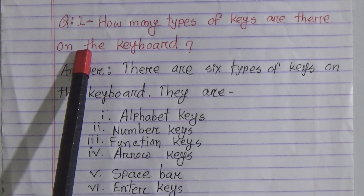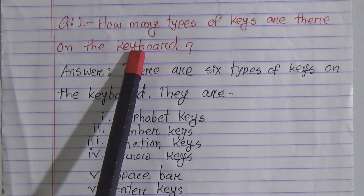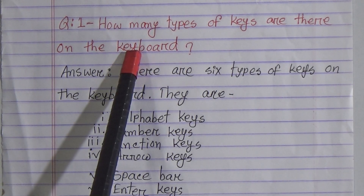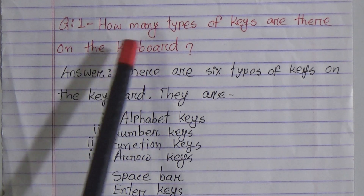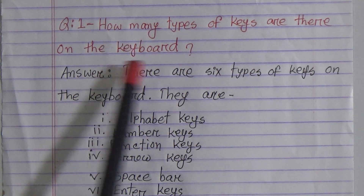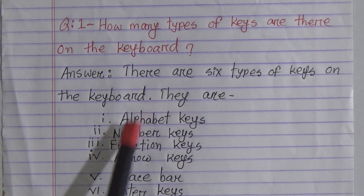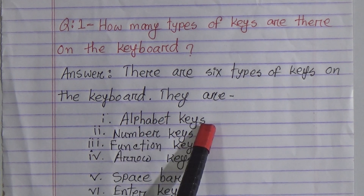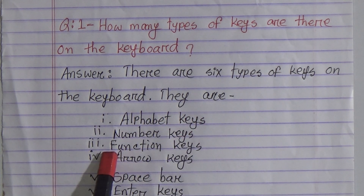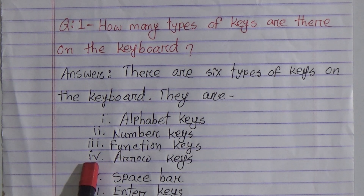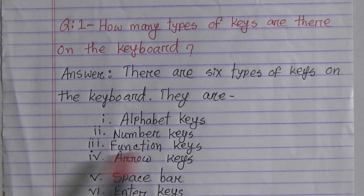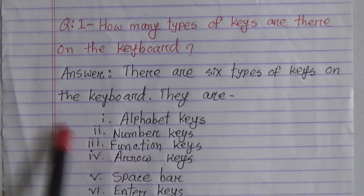Let us start our class. Question one: how many types of keys are there on the keyboard? There are six types of keys on the keyboard, such as: number one, alphabet keys; number two, number keys; number three, function keys; number four, arrow keys; number five, space bar; and number six, enter key.